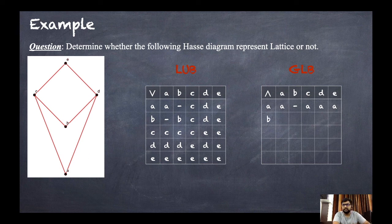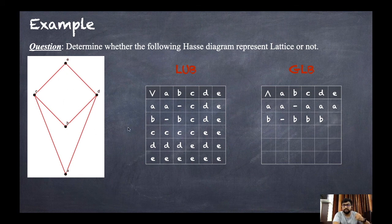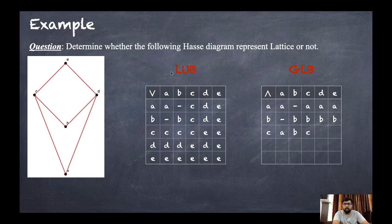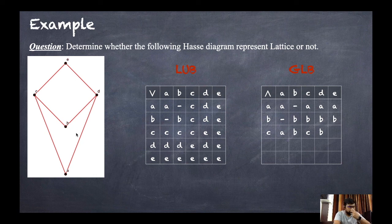For b and a it is dash. GLB of b and b is b, b and c is b, b and d is b, b and e is b. For c and a it is a, c and b is b, c and c is c. For c and d: the lower bounds are b and a; the greatest one is b, so GLB of c and d is b.